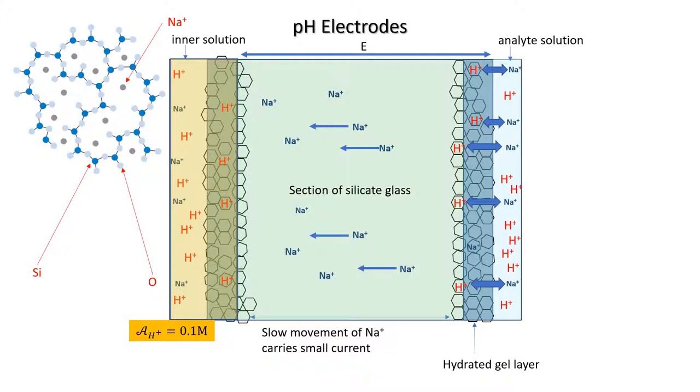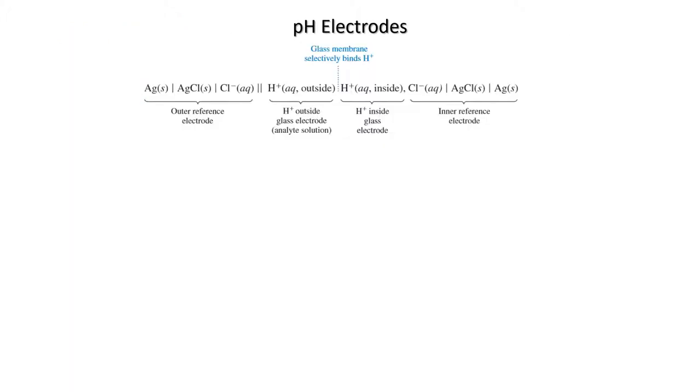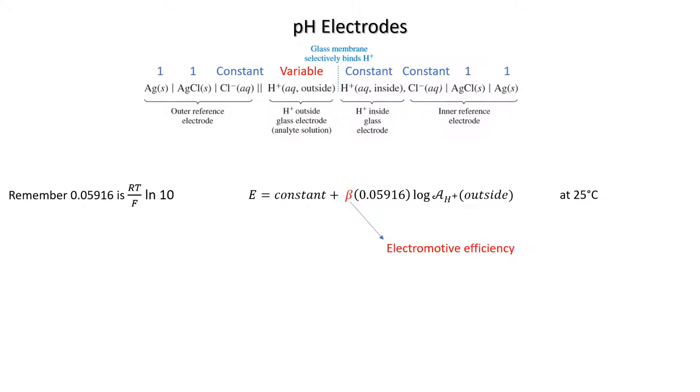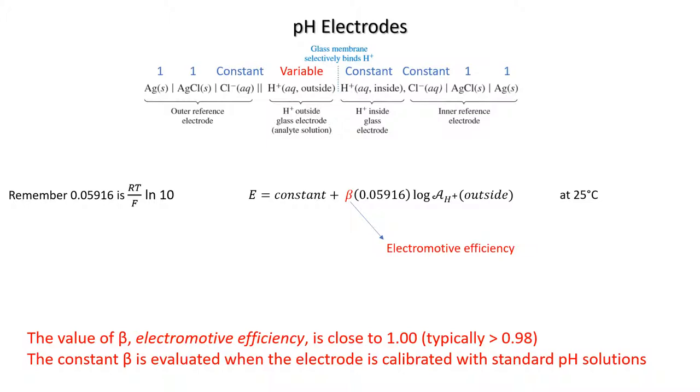The line diagram for a glass pH electrode looks like this. It may look fairly complicated, but every element in it is either constant or has been set at unity apart from the H⁺ activity of the outer solution or the analyte. As when we derived an equation for the selective membrane electrode, the constants now can all be collected and the meter reading is now proportional to the proton activity in the outer solution.